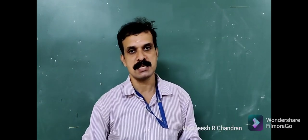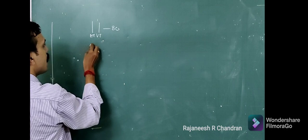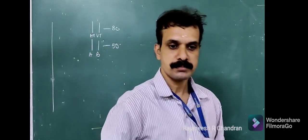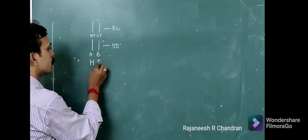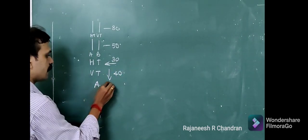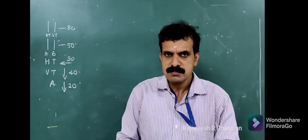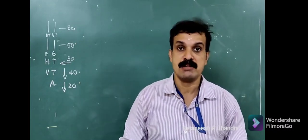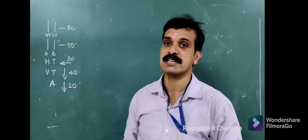The problem you can see on your screen right now. The projectors drawn through the horizontal trace and vertical trace are at a distance of 80, and those drawn through the end points of AB are at a distance of 50. The horizontal trace is 30 mm behind VP, and the vertical trace is 40 mm below HP. The end A of the line is 20 mm below HP.